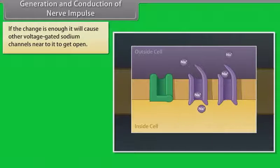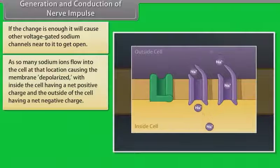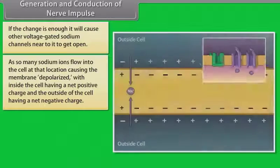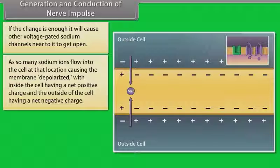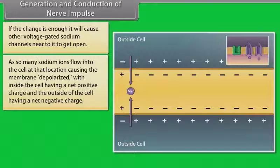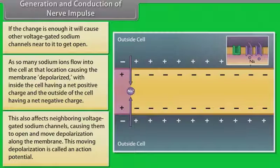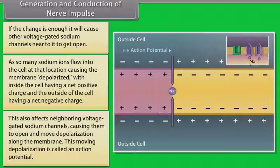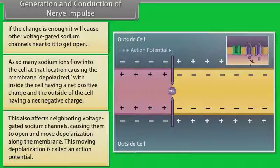As so many sodium ions flow into the cell at that location, causing the membrane to depolarize, with inside the cell having a net positive charge and the outside having a net negative charge. This also affects neighboring voltage-gated sodium channels, causing them to open and move depolarization along the membrane. This moving depolarization is called an action potential.